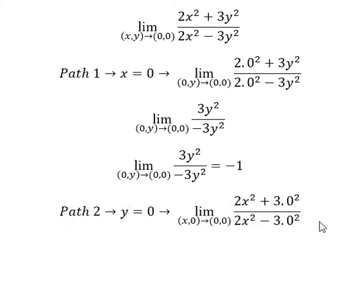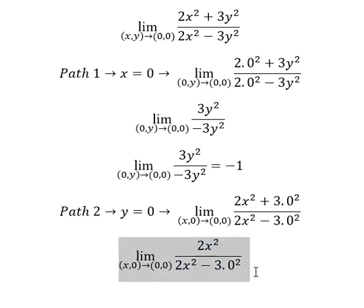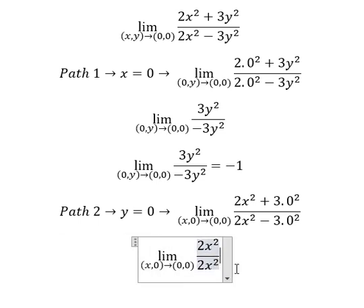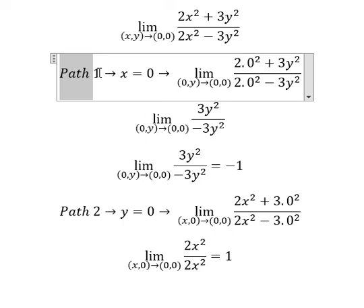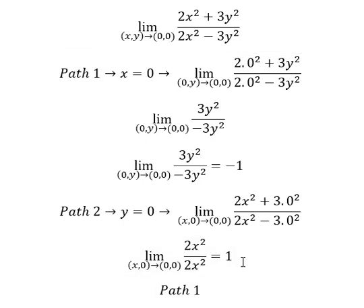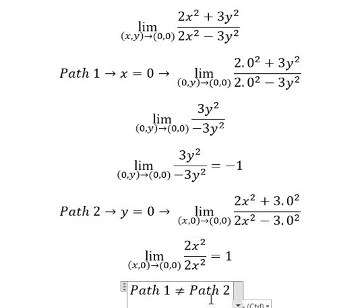We simplify, we divide, and we get one. So negative one is not equal to one. That means path number one does not equal path number two.